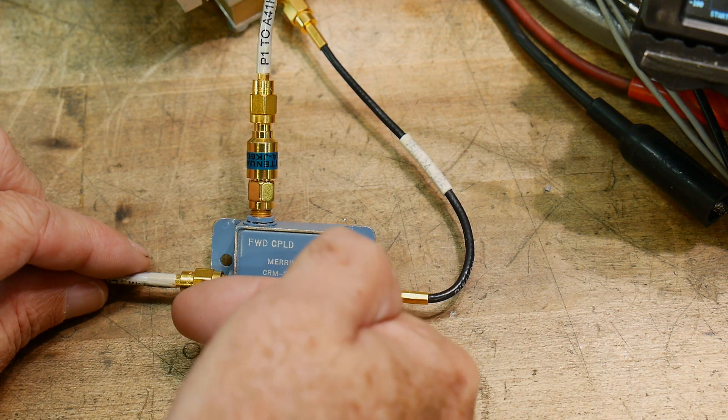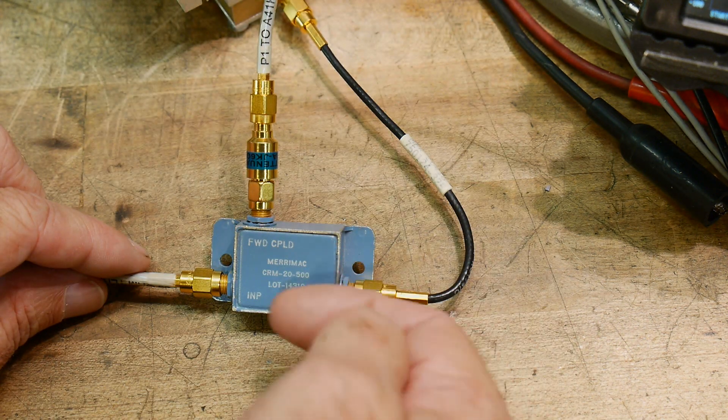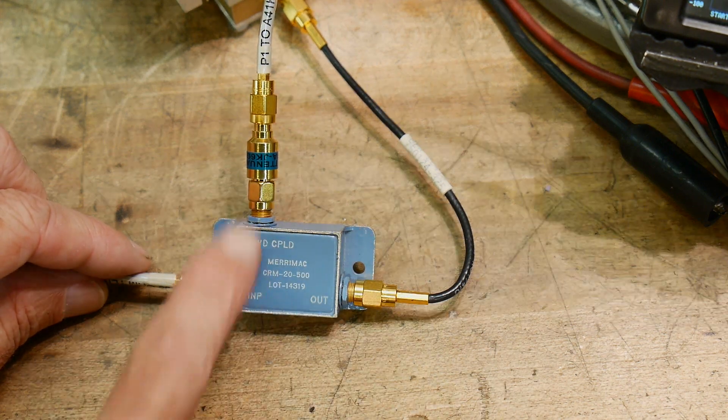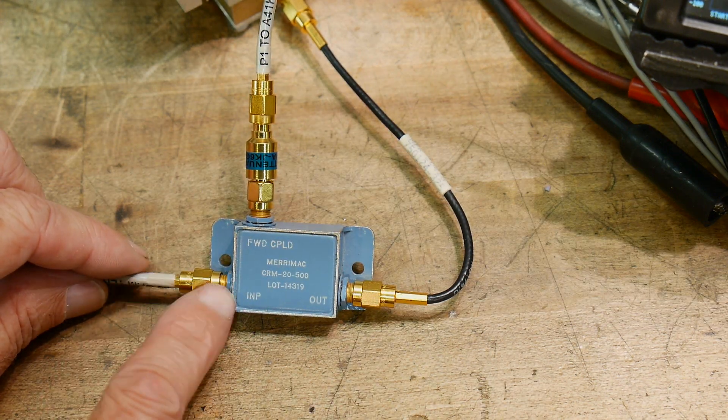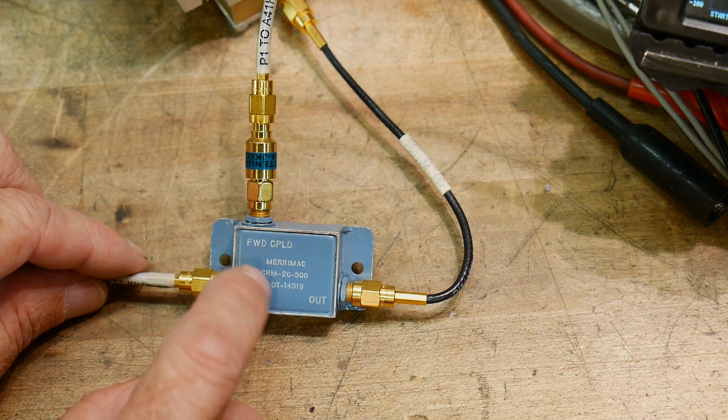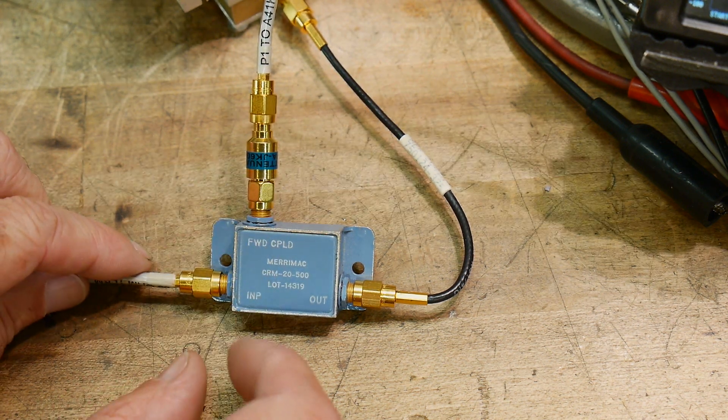Forward-coupled means that the power going in the forward direction gets coupled out. And power coming in the reverse direction, if there's any reflection, does not get coupled. So it's kind of a one-way valve, and it does sample a little bit. Like I said, it samples 13 dB of signal here.